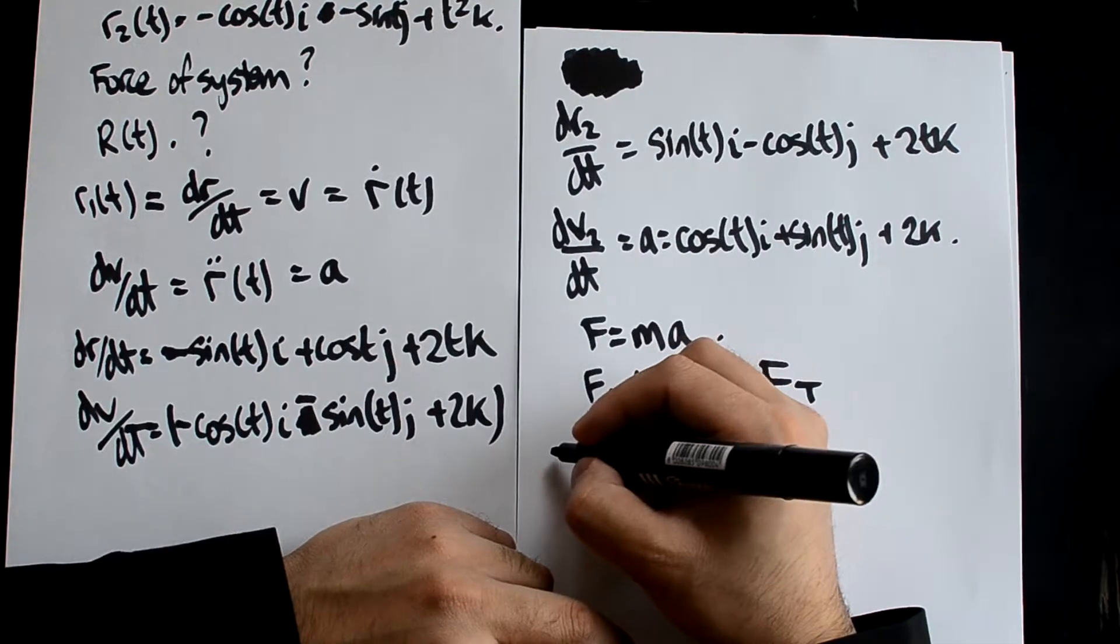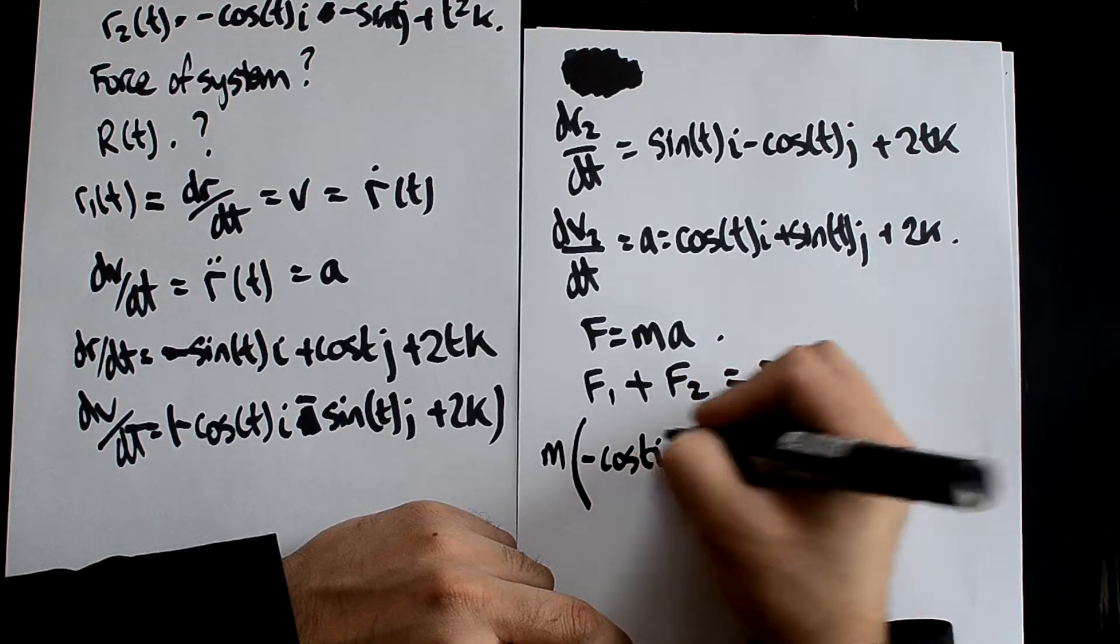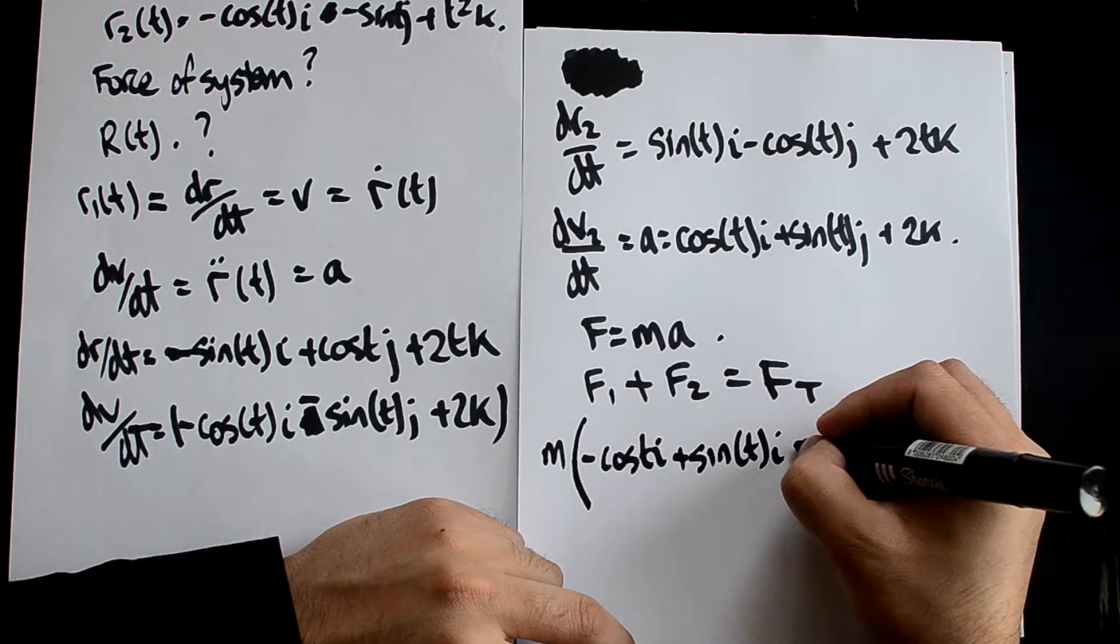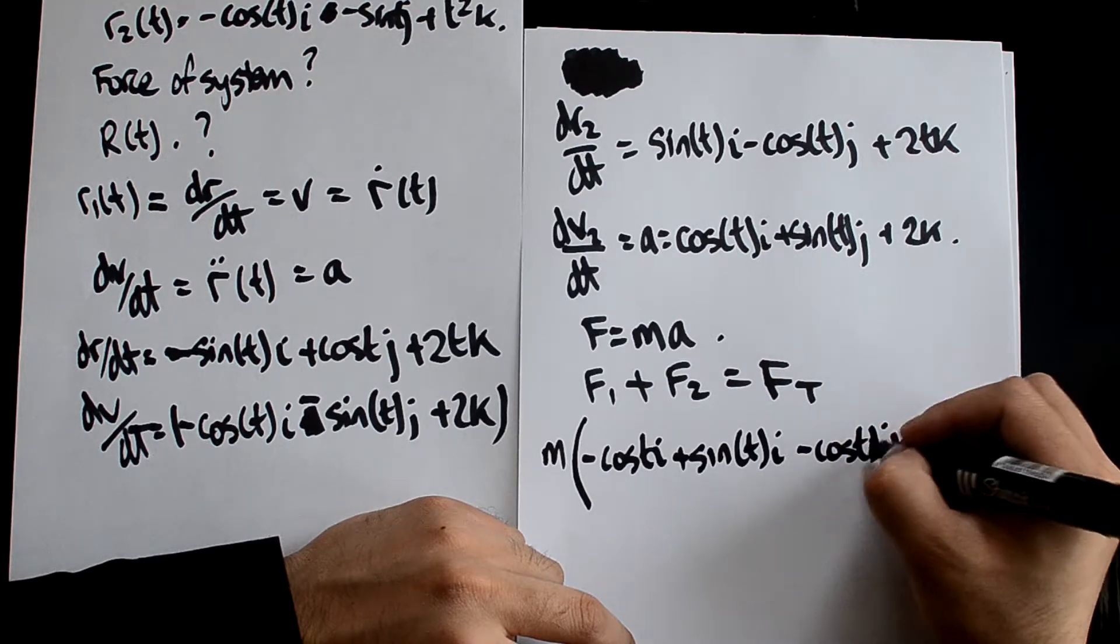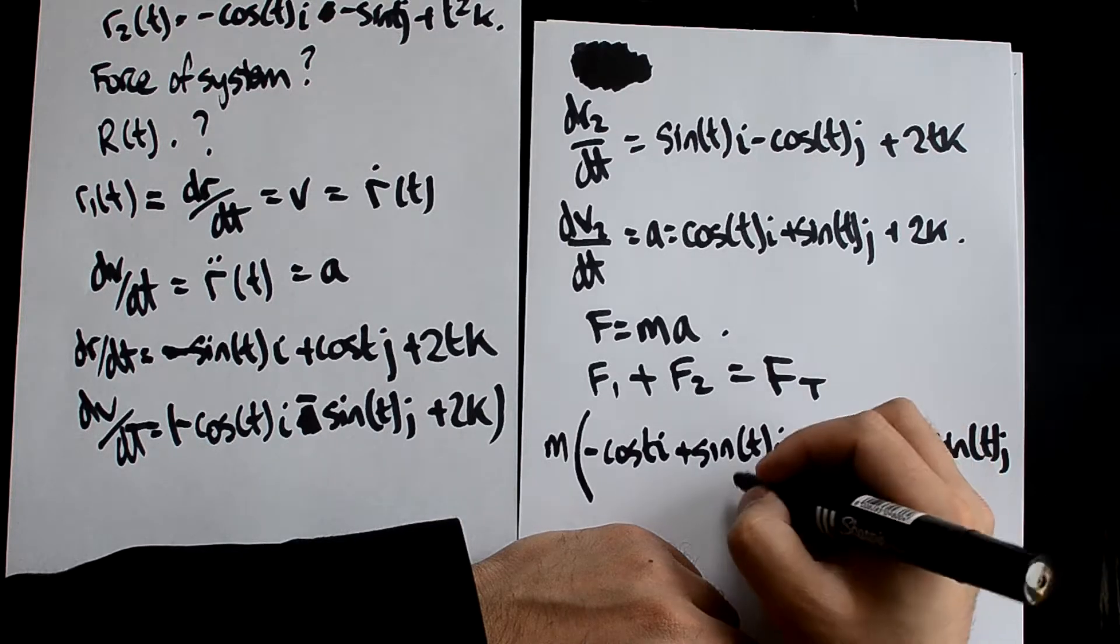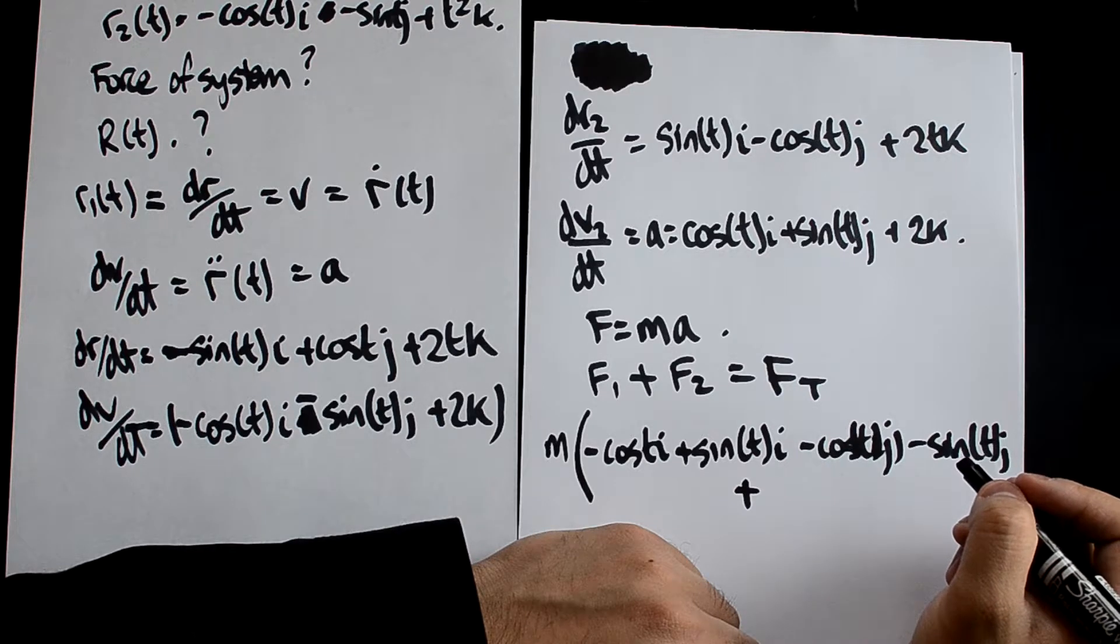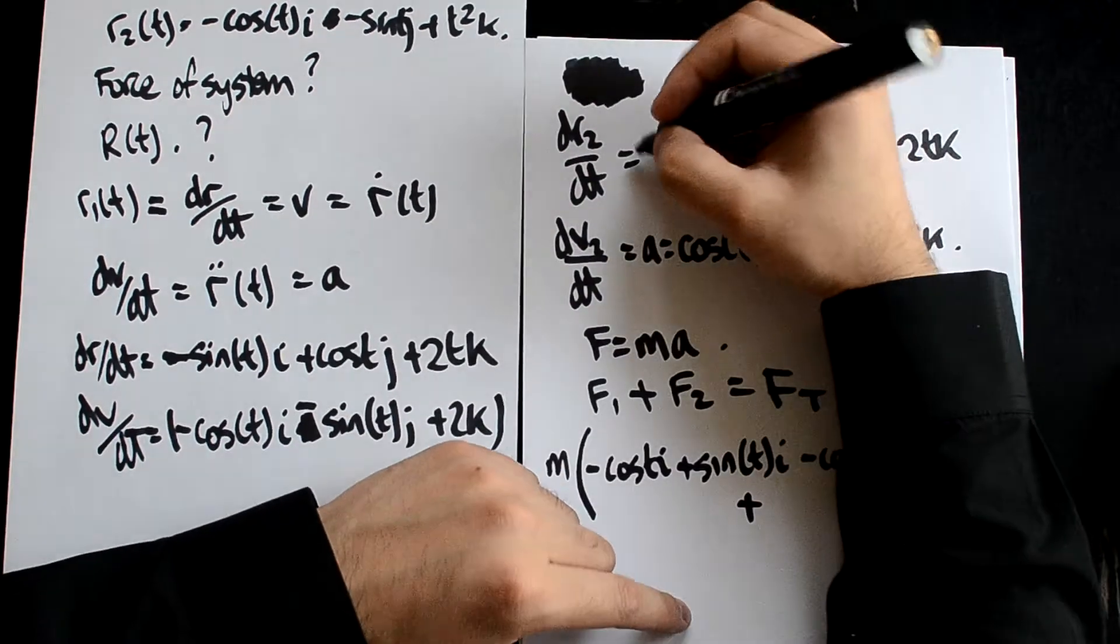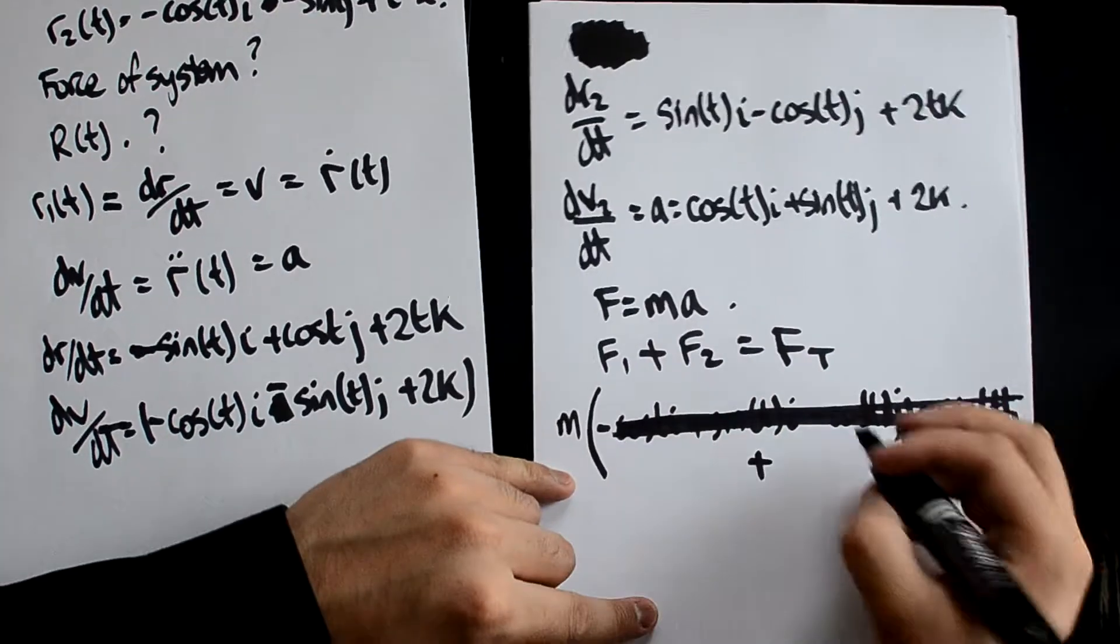So that's the force of this and the force of this added together, multiplied by the mass, which would equal the total force. So if I do that, it would be M, all multiplied by... let me write this correctly.